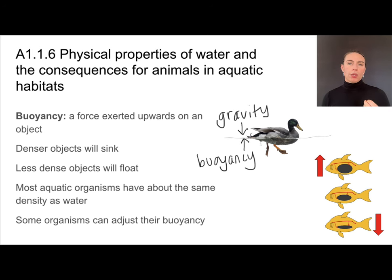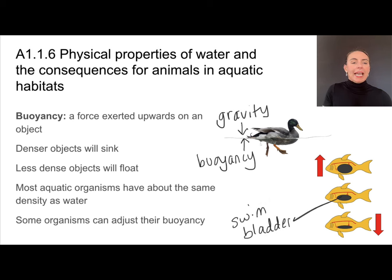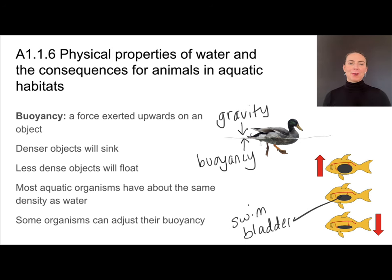Most aquatic organisms have about the same density as water — they don't want to be stuck at the bottom or always at the top — but some organisms can actually adjust their buoyancy. For example, a fish has what's called a swim bladder. When the fish fills it with air, it becomes less dense and starts to float. When it deflates the swim bladder, it becomes more dense and sinks — allowing the fish to adjust its own density to either rise or fall in water, all due to water's buoyancy.